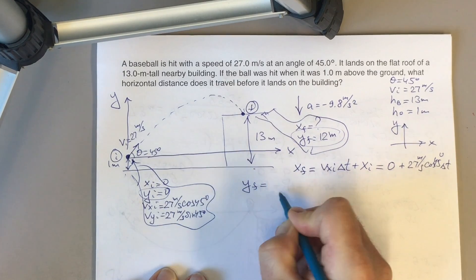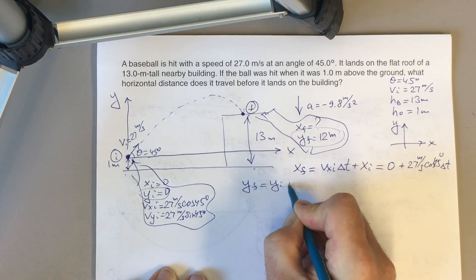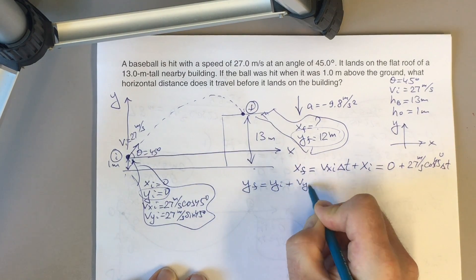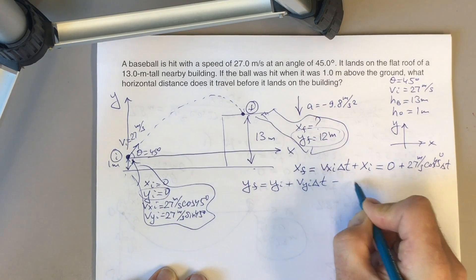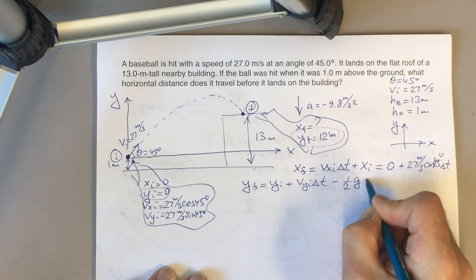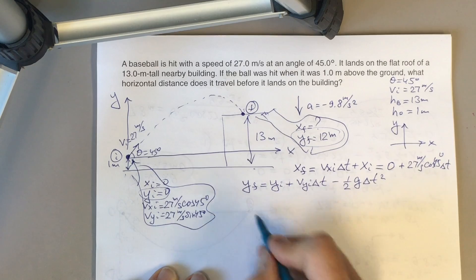The general equation is y-final equals y-initial plus vy-initial delta t minus one-half g delta t squared. If you plug in your data,